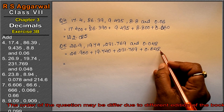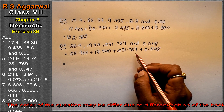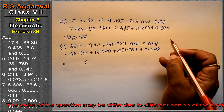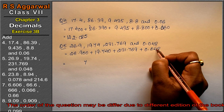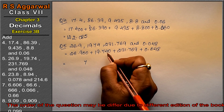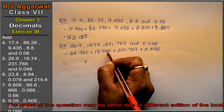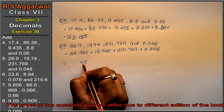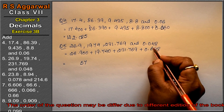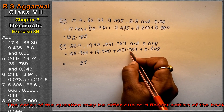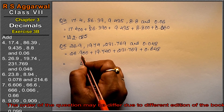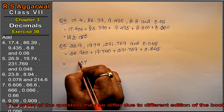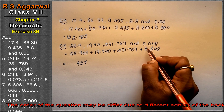Now adding: 8 and 9 is 17, write 7 carry 1. Next column: 5. 5 and 6 is 11; 11 and 4 is 15, write 5 carry 1. Next: 8. 8 and 7 is 15; 15 and 4 is 19 — no wait, 15 and 24. Write 4, carry 2.